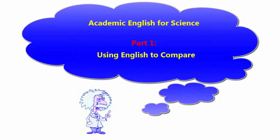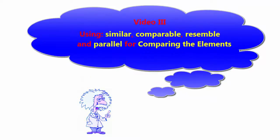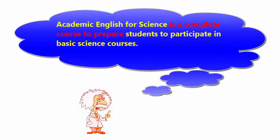Academic English for Science, Part 1: Using English to Compare. Video 3 covers using similar, comparable, resemble, and parallel for comparing the elements. Academic English for Science is a complete course to prepare students to participate in basic science courses.